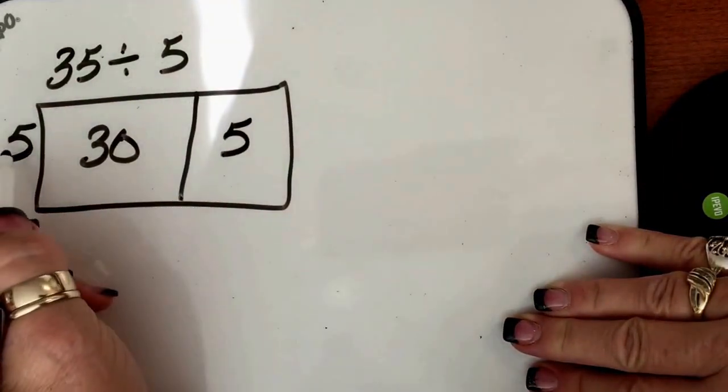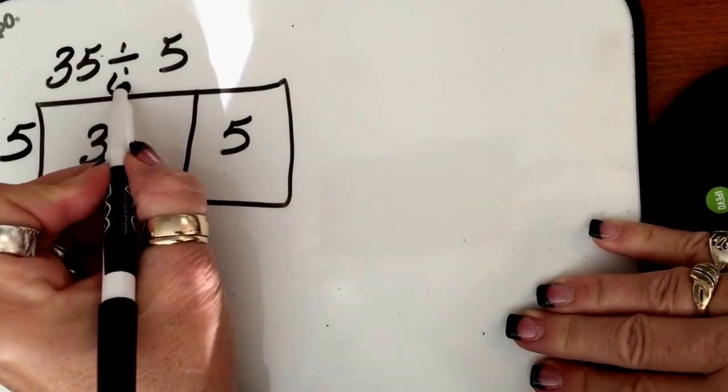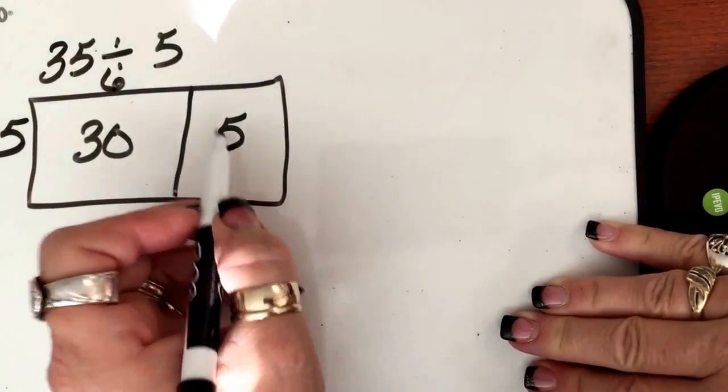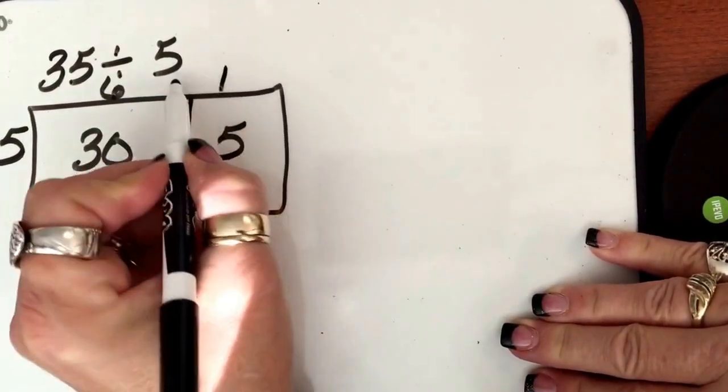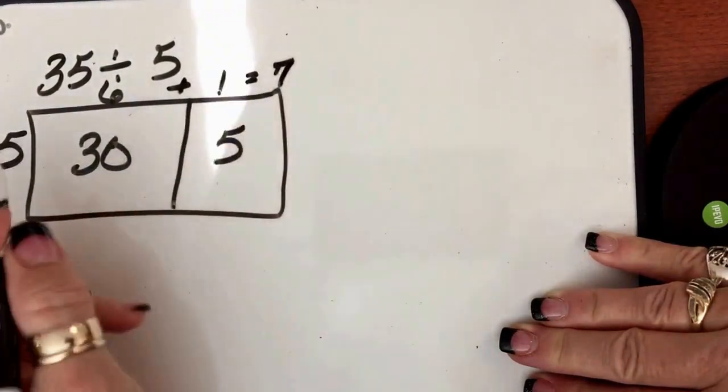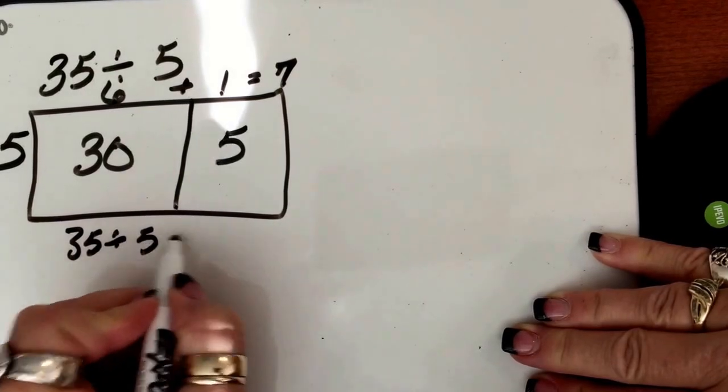So let's see, 5 times what gives me 30? 5 times 6 gives me 30. And 5 times what gives me 5? 5 times 1. So 6 plus 1 equals 7. So 35 divided by 5 equals 7.